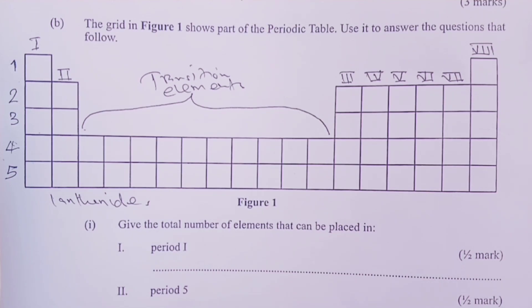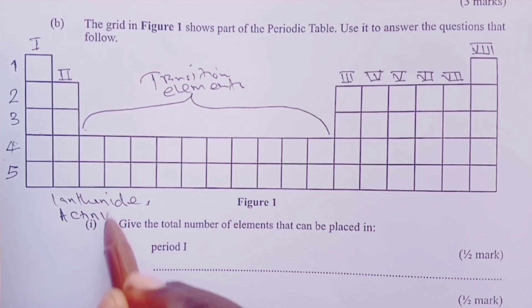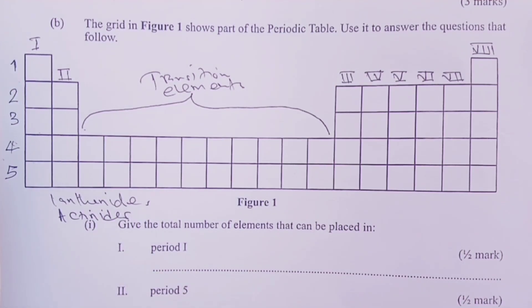Then we have another separation in period 7 that we call actinides. This separation has elements between number 89, that's atomic number 89, and 104. So the series are named after element number 89, which is actinium. This makes our complete periodic table to have a total of 109 known elements. With that extra information, let's now go ahead and answer our questions as tested based on the grid.